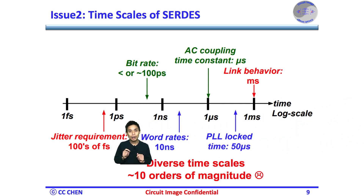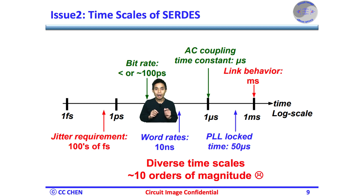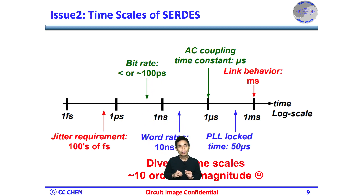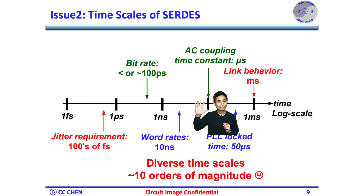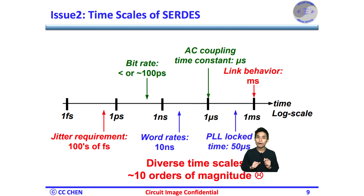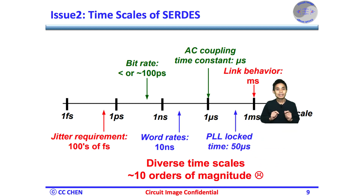For example, first, jitter requirements are on the order of 100 femtoseconds. Second, bit period is on the order of 100 femtoseconds. Third, eye diagram is on the order of 10 ns. Fourth, a coupling time constant on the order of 1 microsecond. Fifth, PLL lock time on the order of 15 microseconds. Lastly, link behavior on the order of 1 millisecond.